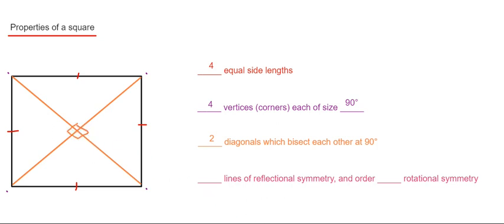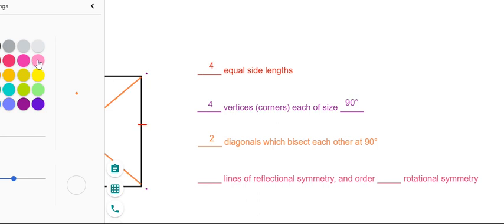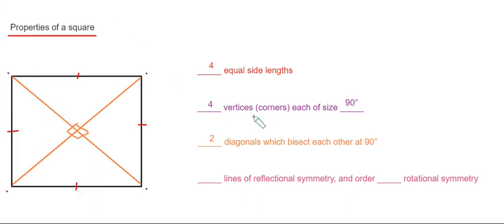Okay, and the final thing we're going to look at are the number of lines of symmetry and the order of rotational symmetry. These are the same as the number of side lengths, so we have four lines of reflectional symmetry, and the order of rotational symmetry is four. Thanks for watching guys, see you next time.